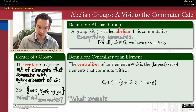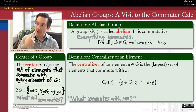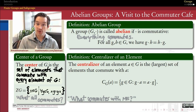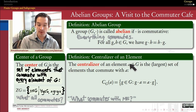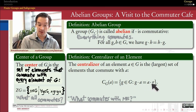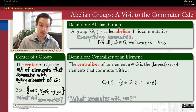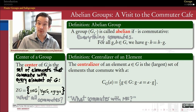The centralizer, meanwhile, is an answer to a more selfish question. If I'm an element in a group G, I might look around and say: what's going to commute with me? The centralizer of an element A is the largest set of elements of that group that commute with A — the set of all G's in the group such that GA equals AG. Every different element in a group can potentially have a different centralizer, so while every group has one center, it has potentially many different centralizers.